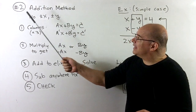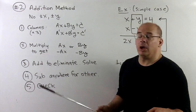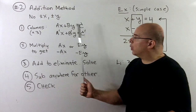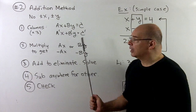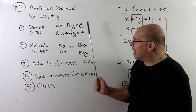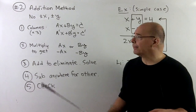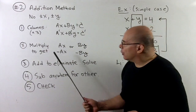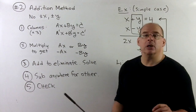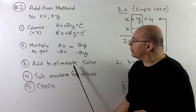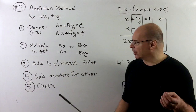For our next method, we have the addition method. Use this when there's no isolating variable — no plus or minus x or plus or minus y. First, put both equations in standard form so there are three columns: an x column, a y column, and a c column. The strategy is to add down all three columns at once and make one variable disappear. To do that, we need either ax over minus ax, or by over minus by. Once we add down and eliminate a variable, we solve for the other one, then back-substitute for the full answer, and check.